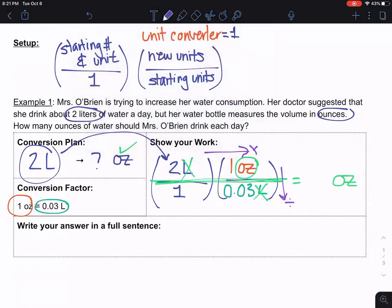So if I do two times one, that's two on the top. One times 0.03, that's 0.03. So two divided by 0.03 is 66.7, and that's my answer. So for the sake of time, I'm not going to write my full sentence, but Ms. O'Brien should drink about 66.7 ounces of water every day.